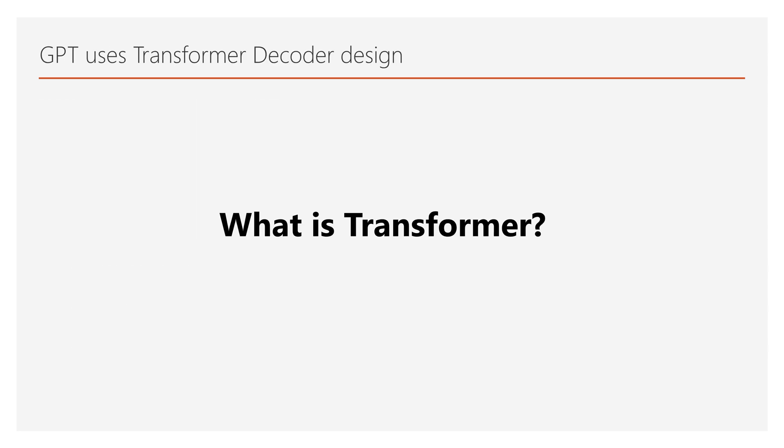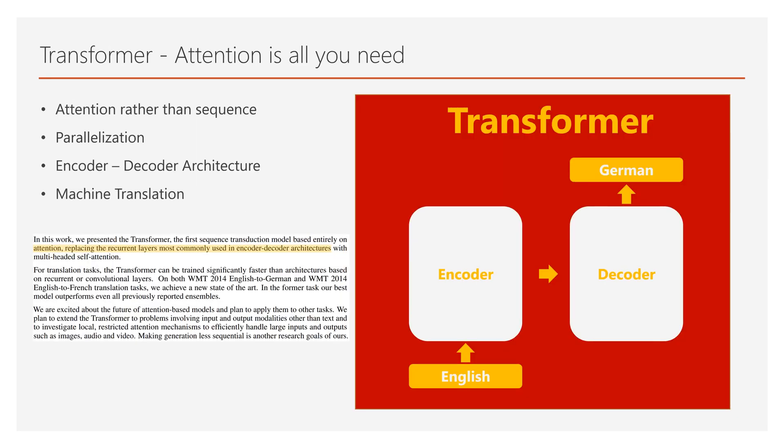So what is the Transformer? Transformer is introduced in the 'Attention is All You Need' paper. The key takeaways are: first, it uses attention rather than sequence; second, since it uses attention rather than sequence of inputs, the Transformer can compute all inputs at once by matrix multiplication; third, the architecture is an encoder-decoder architecture; and fourth, it achieved state-of-the-art on English-to-German and English-to-French machine translation.